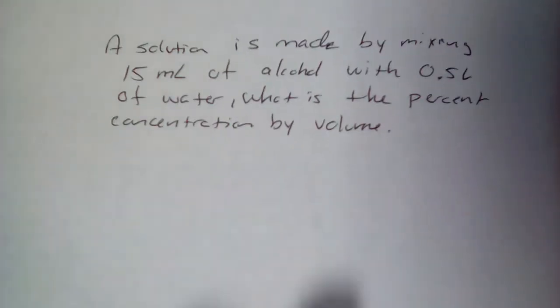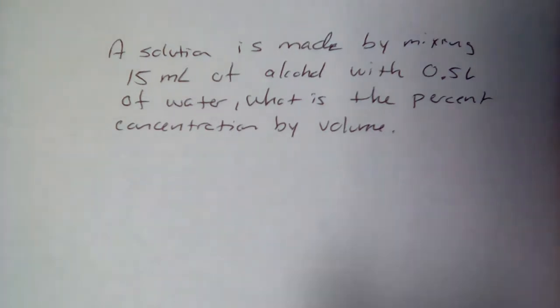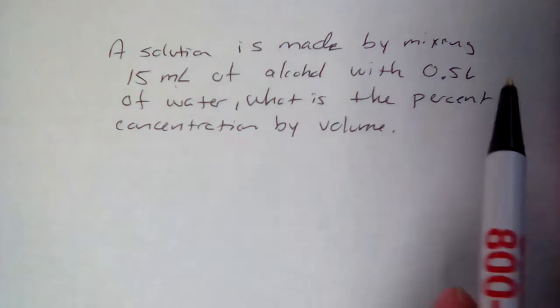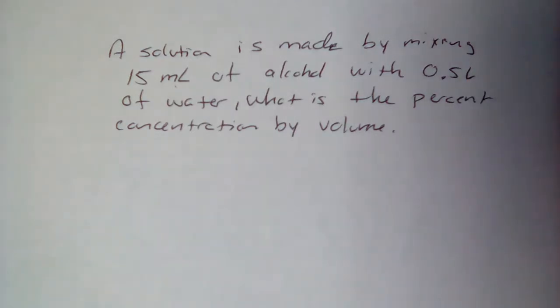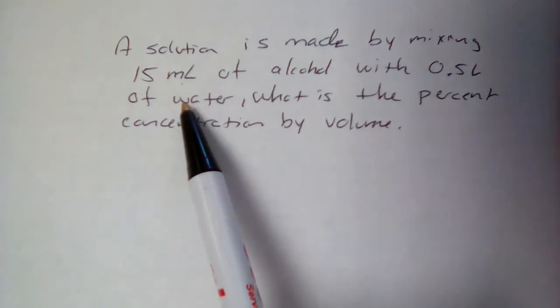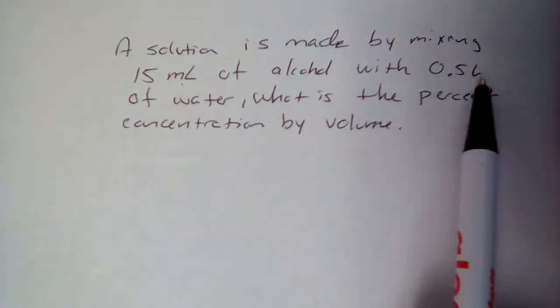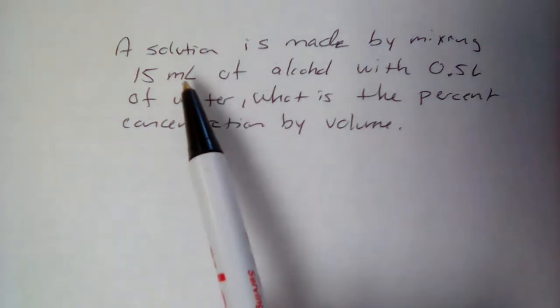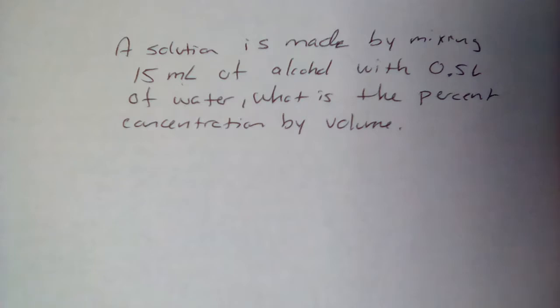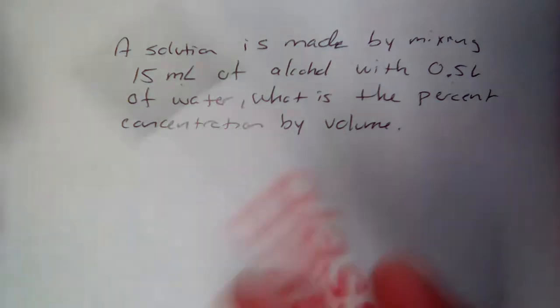Alright, so this problem has everything that I told you might happen in it. It's got two different units, milliliters and liters, and we're going to have to convert one of them to make sure that they match. And it wouldn't matter if we convert the milliliters into liters or the liters into milliliters, as long as they're both the same we're fine. The other thing that happens here is that we have solute and solvent. The one we have in the smaller amount, that's the solute. The one we have in the larger amount, that's the solvent. We have to add these together to get the total amount of solution. So let's go ahead and begin by doing a conversion. And again, it really doesn't matter, so what I'm going to do just for fun is I'm going to convert the 0.5 liters of water into milliliters.